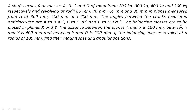The balancing masses are to be placed in planes X and Y. The distance between the planes A and X is 100 mm, between X and Y is 400 mm and between Y and D is 200 mm. If the balancing masses revolve at a radius of 100 mm, find their magnitudes and angular positions.